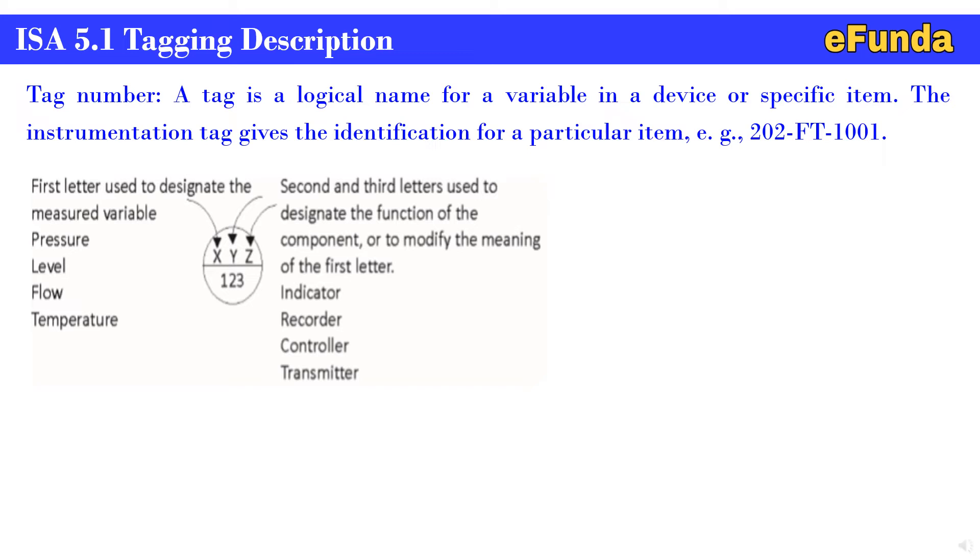X is the first letter. The first letter is used to designate the measured variable - pressure, level, flow, temperature.